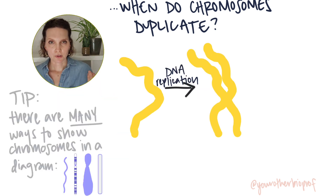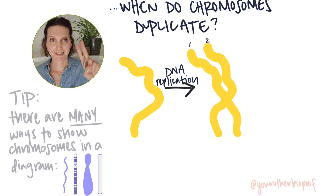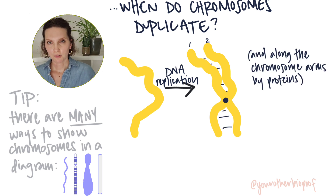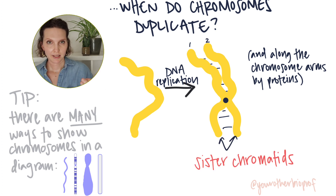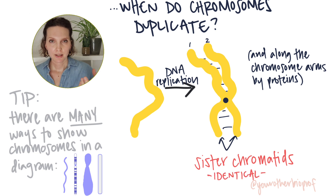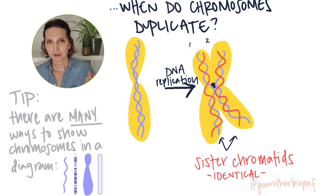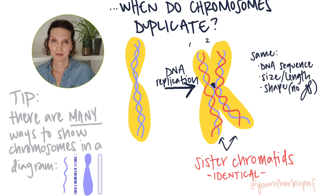A duplicated chromosome consists of two molecules of DNA. They are identical to each other and connected at the centromere. These two parts of the chromosome are called sister chromatids. They each represent one molecule of DNA bound to protein, and if we did it right, they're going to be identical in terms of DNA sequence, length, and shape.